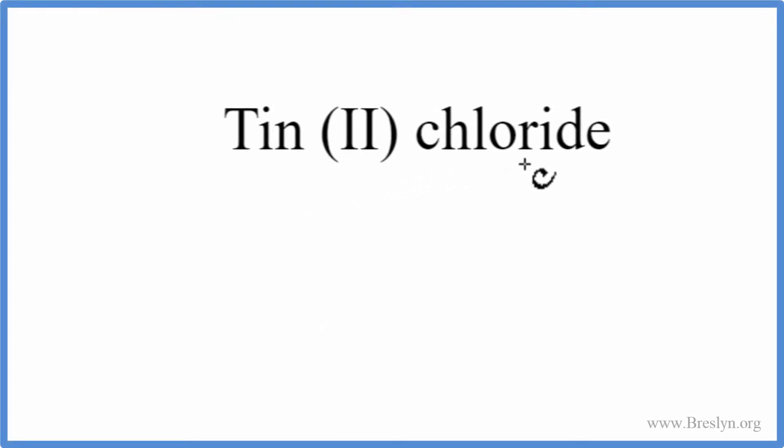To write the formula for Tin (II) chloride, we go to the periodic table and we look up tin, and that's Sn, and chloride, we're looking for the chlorine atom, that's Cl.